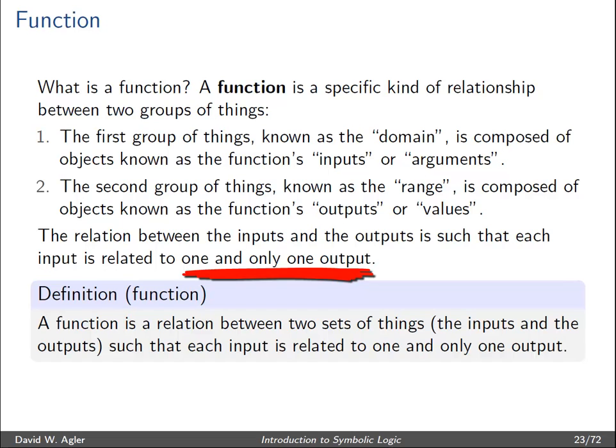The relationship of the inputs to the outputs is such that each input is related to one and only one output. So the notion of a function is just a type of relationship between two sets — the inputs and the outputs — such that each input is related to one and only one output. Let's look at some examples to get a clear sense of what a function is.